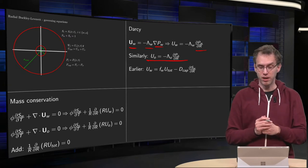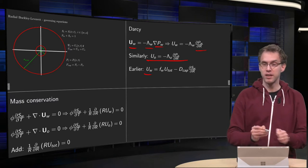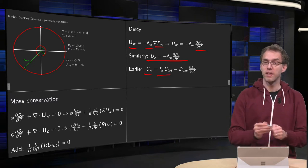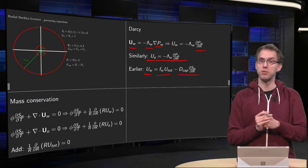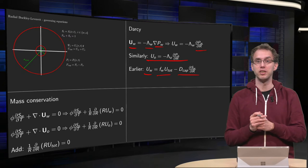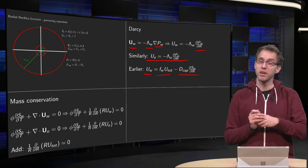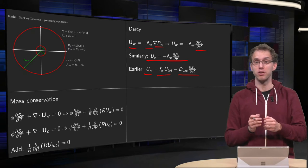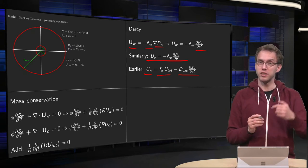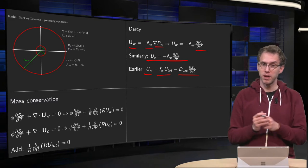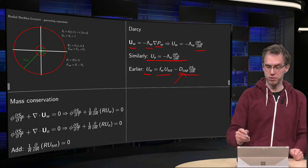Then earlier we learned how to express uw in terms of u-total, and in terms of capillary diffusion and dsw/dr, the derivation goes exactly the same, so you can express your water velocity in terms of your total velocity times fw, which is the lambda w divided by lambda w plus lambda oil, and your capillary diffusion.